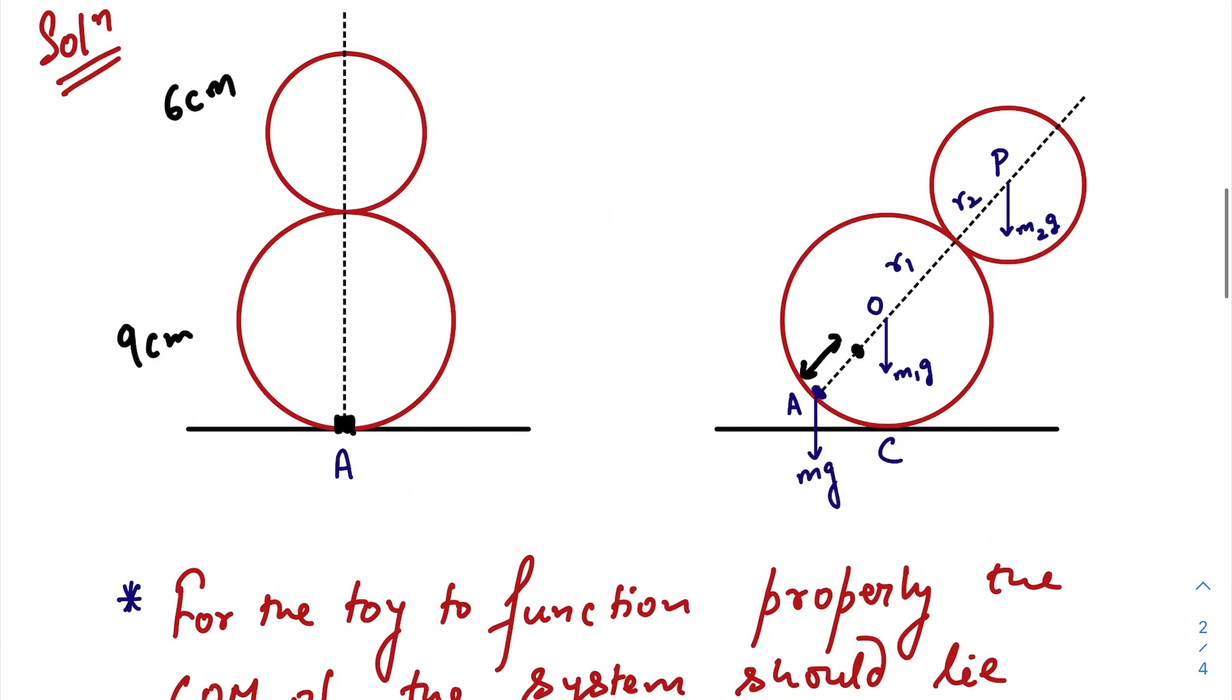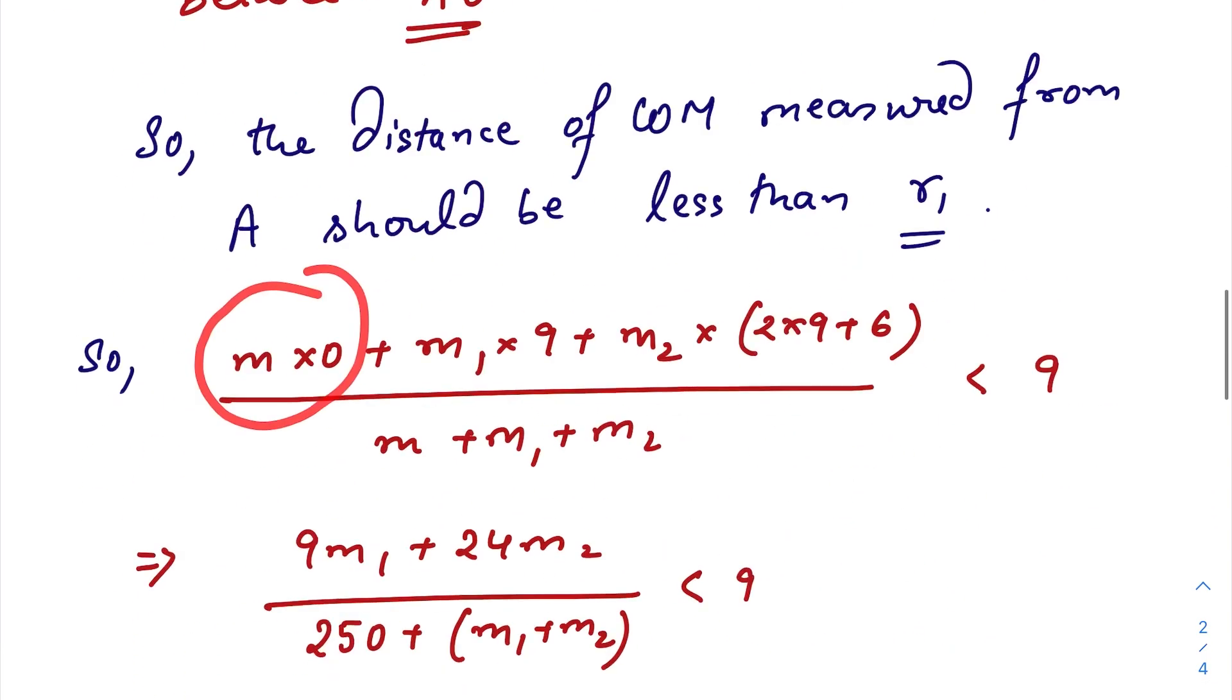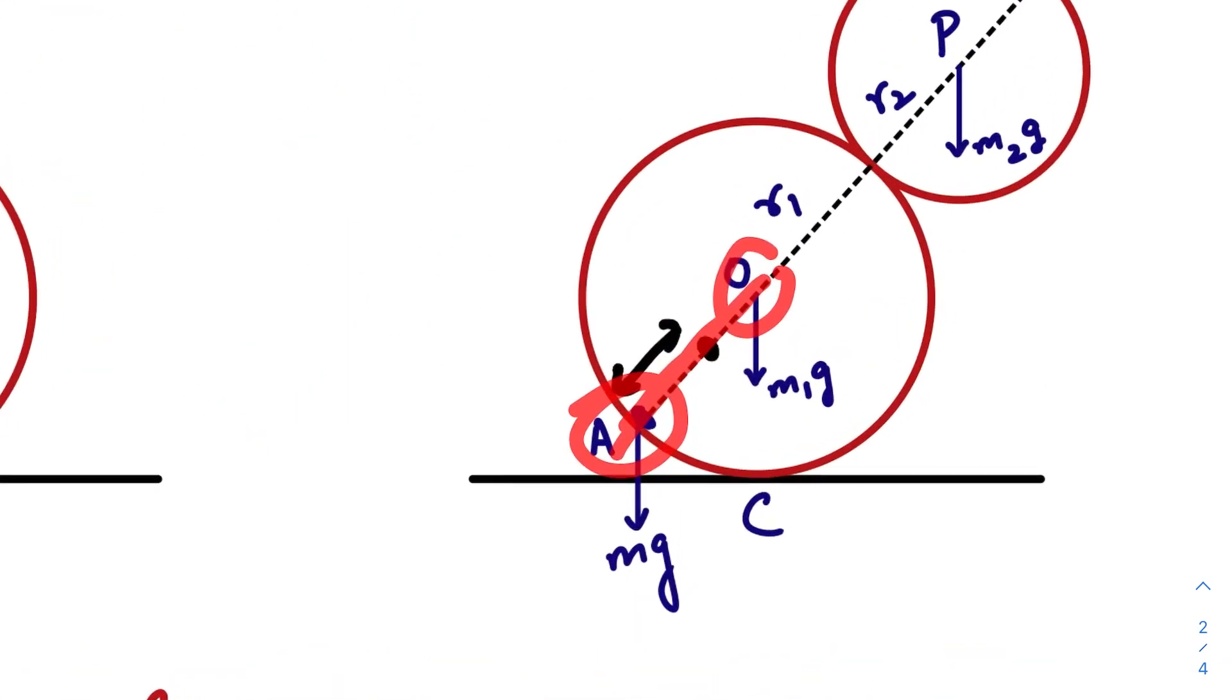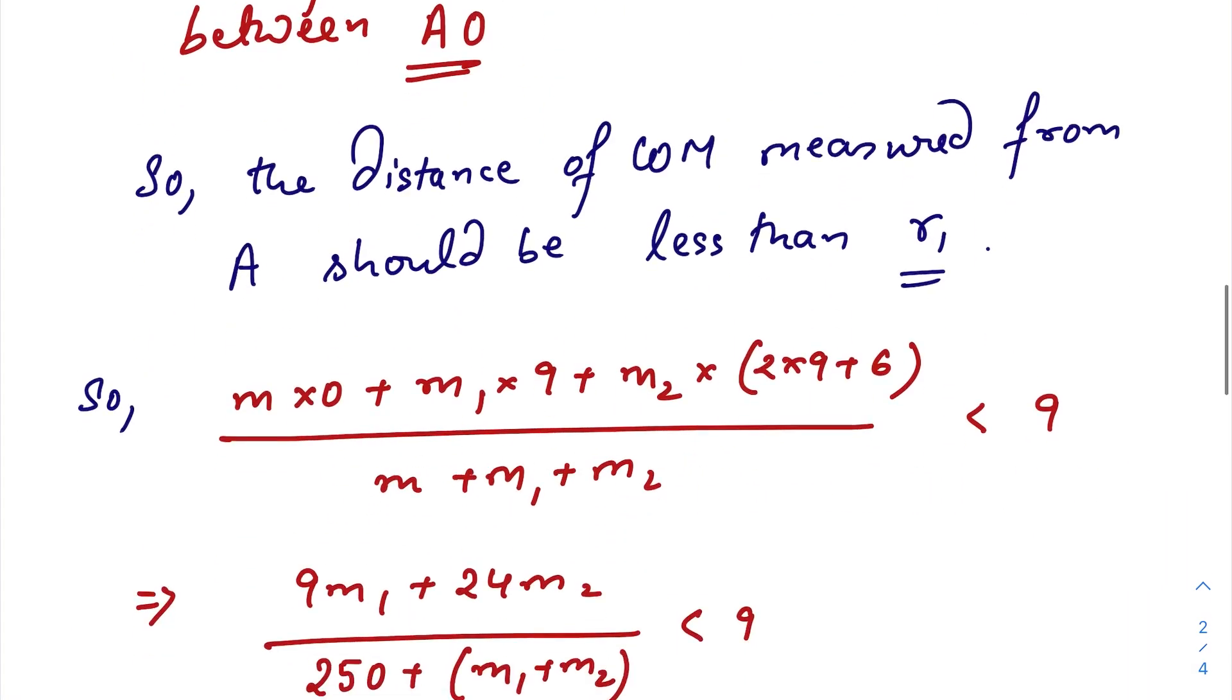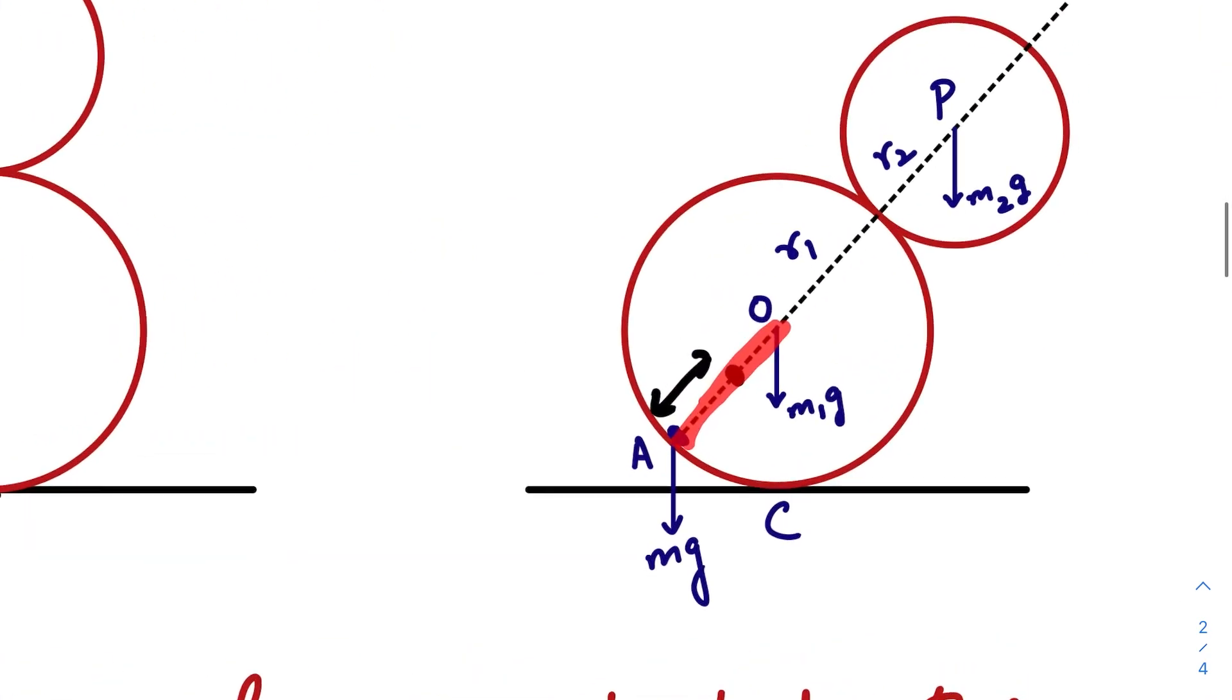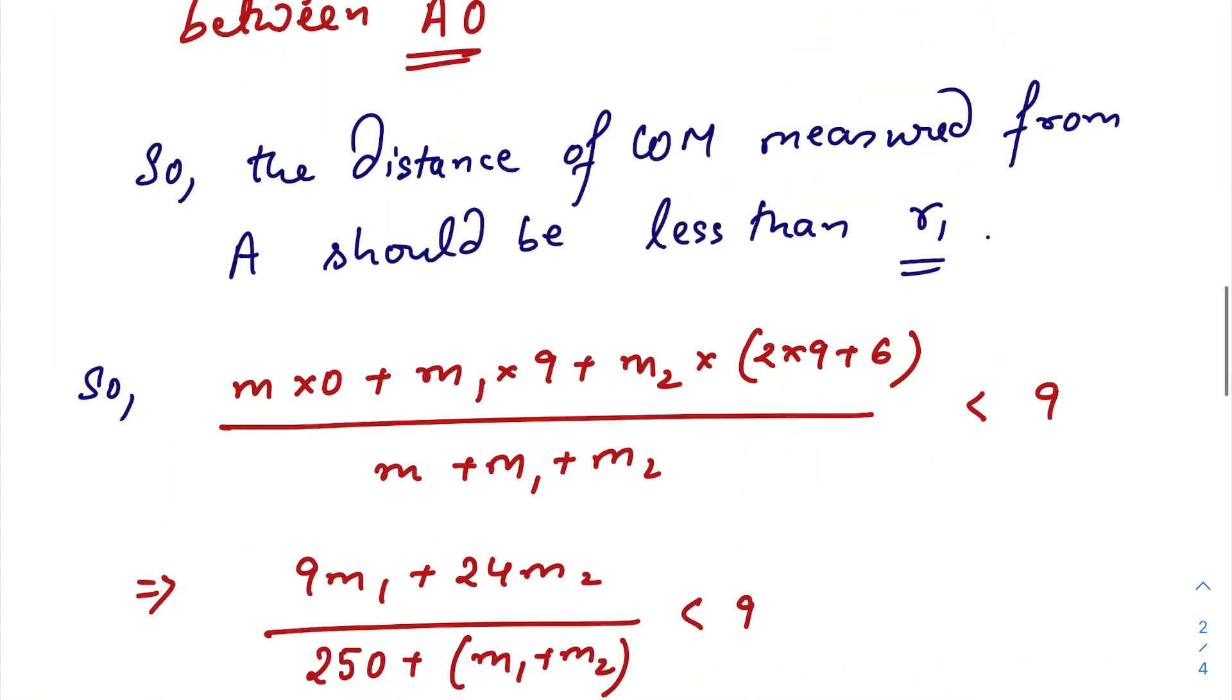So m times 0, where m is the mass of the load, plus m1 times 9, this radius is 9, plus m2 times 2 times 9, that is 18 plus 6 equals 24, divided by the total mass. That should be less than 9.